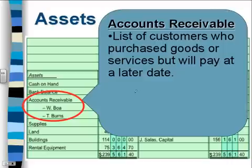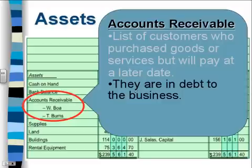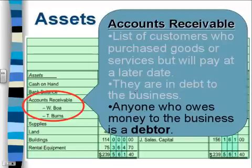Accounts receivable — we have a list here of customers who purchased goods or services but are going to pay at a later date. They are in debt to the business; they owe us money. Anyone who owes money to the business is called a debtor. A debtor is another word for accounts receivable.